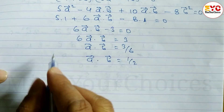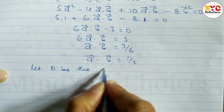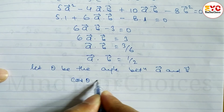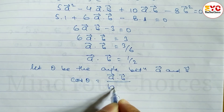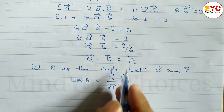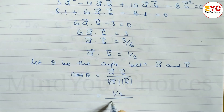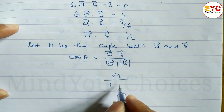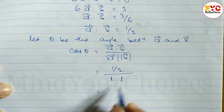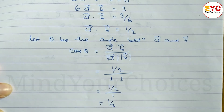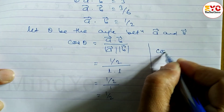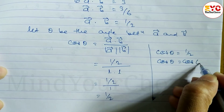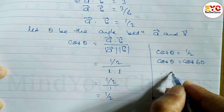Let theta be the angle between a vector and b vector. The formula is: cos theta equals a·b divided by modulus of a times modulus of b. Since a·b = 1/2 and both moduli equal 1, cos theta = 1/2. Since cos 60° = 1/2, therefore theta equals 60 degrees.